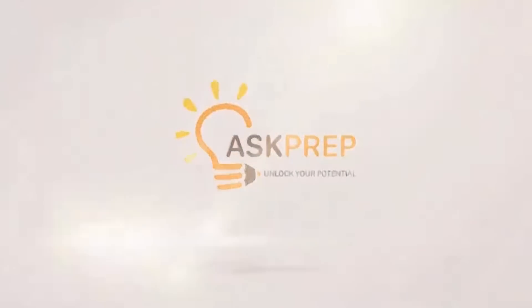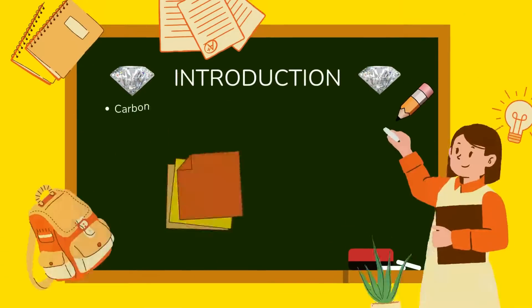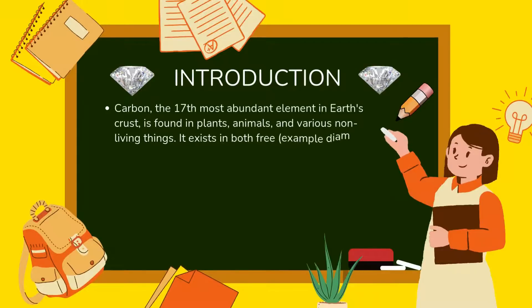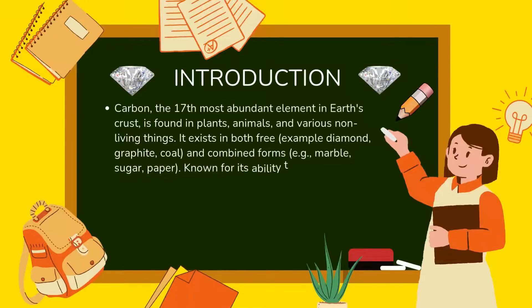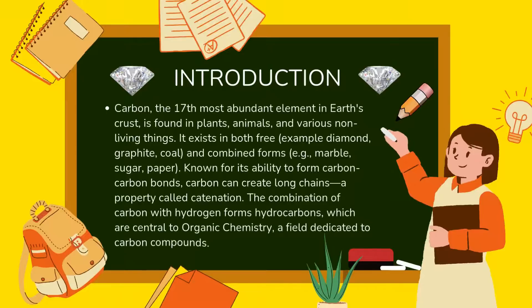Welcome to our YouTube channel Ask Prep. In today's video we are going to study about carbon and its compounds. Introduction: carbon, the 17th most abundant element in Earth's crust, is found in plants, animals and various non-living things. It exists in both free forms (e.g. diamond, graphite, coal) and combined forms (e.g. marble, sugar, paper). Carbon is known for its ability to form carbon-carbon bonds — a property called catenation. The combination of carbon with hydrogen forms hydrocarbons, which are central to organic chemistry.